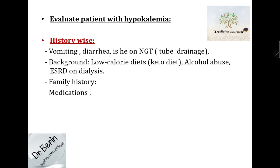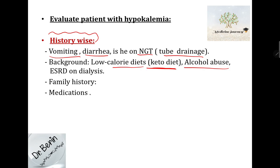How to evaluate patients with hypokalemia? History-wise: ask the patient about symptoms like vomiting and diarrhea. If your patient is on NGT, check if there is regular suctioning or tube drainage. Ask if they follow specific low-calorie diets, especially keto diet. Check if the patient is a chronic alcohol abuser, or has end-stage renal disease on dialysis — these patients have fluctuations in potassium level. Family history is important for familial periodic paralysis, and medication history is very important — check for diuretics, antibiotics, or laxatives.